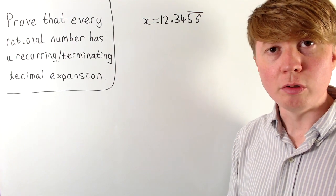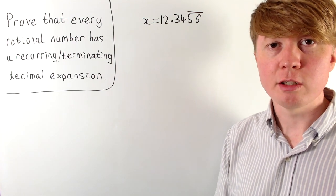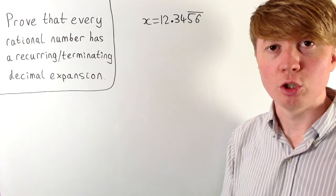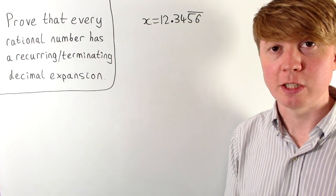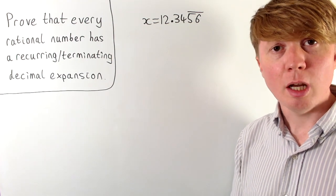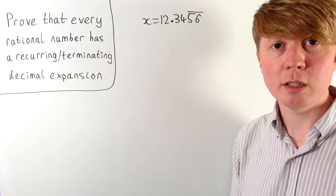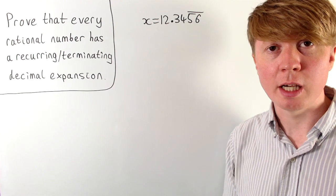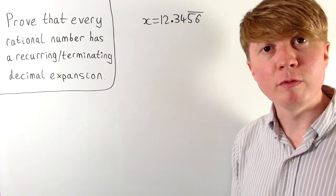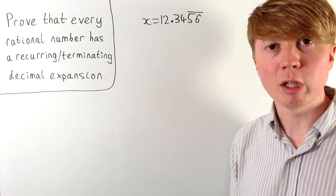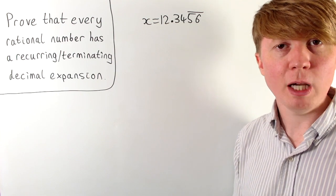We're going to look at a proof that every rational number has either a recurring or a terminating decimal expansion. I found this proof particularly interesting because it gives some nice insight into the classic trick for converting from a recurring decimal into a fraction.